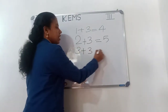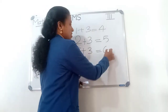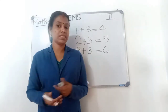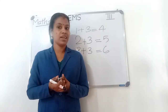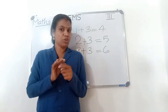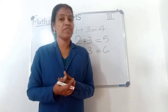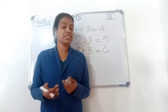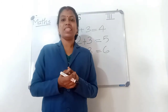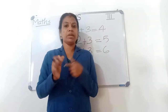Then 3 plus 3 is 6. Study the same-number additions: 1 plus 1 is 2, 2 plus 2 is 4, 3 plus 3 is 6, 4 plus 4 is 8, 5 plus 5 is 10, 6 plus 6 is 12, 7 plus 7 is 14, 8 plus 8 is 16, 9 plus 9 is 18, 10 plus 10 is 20.